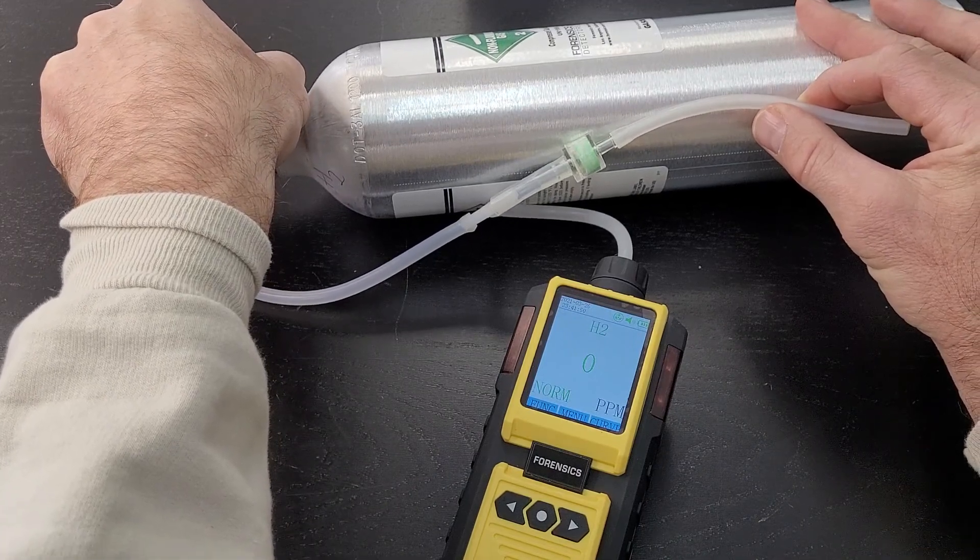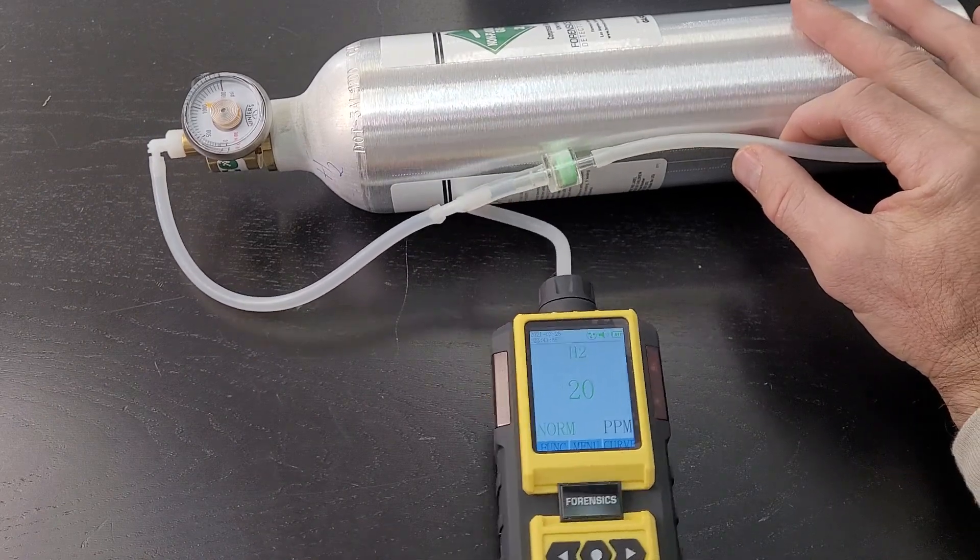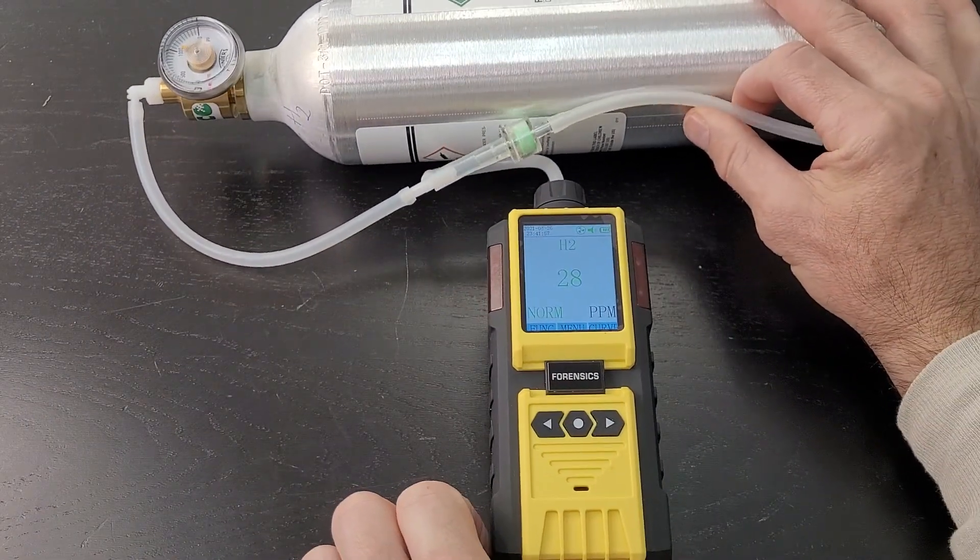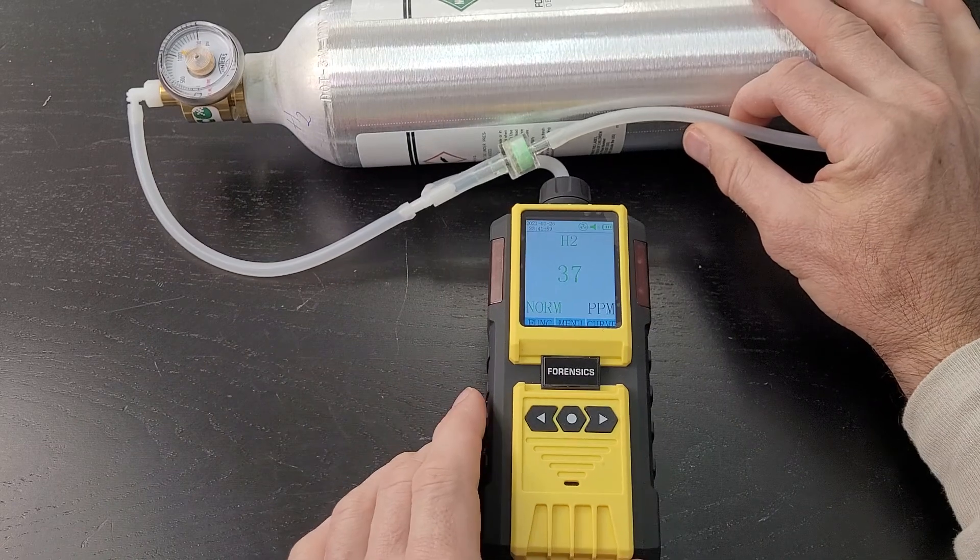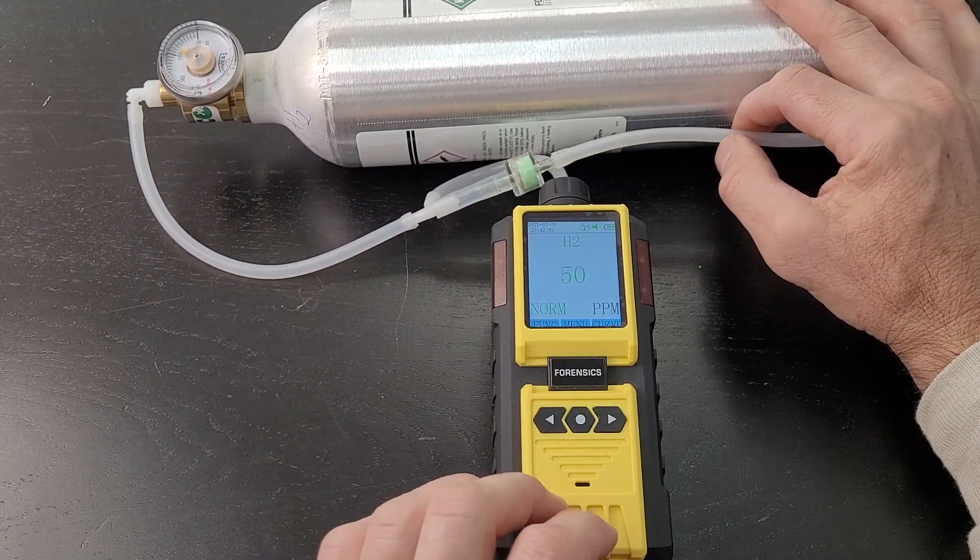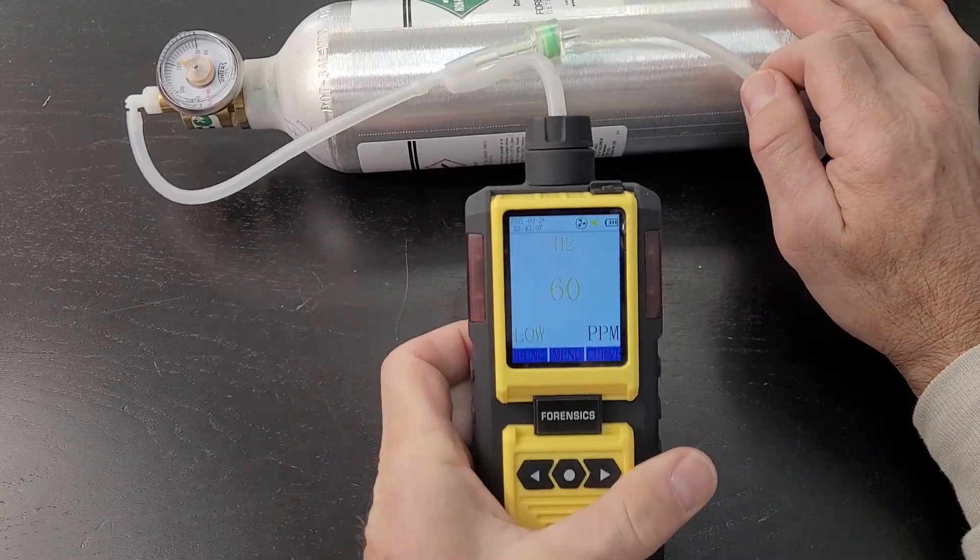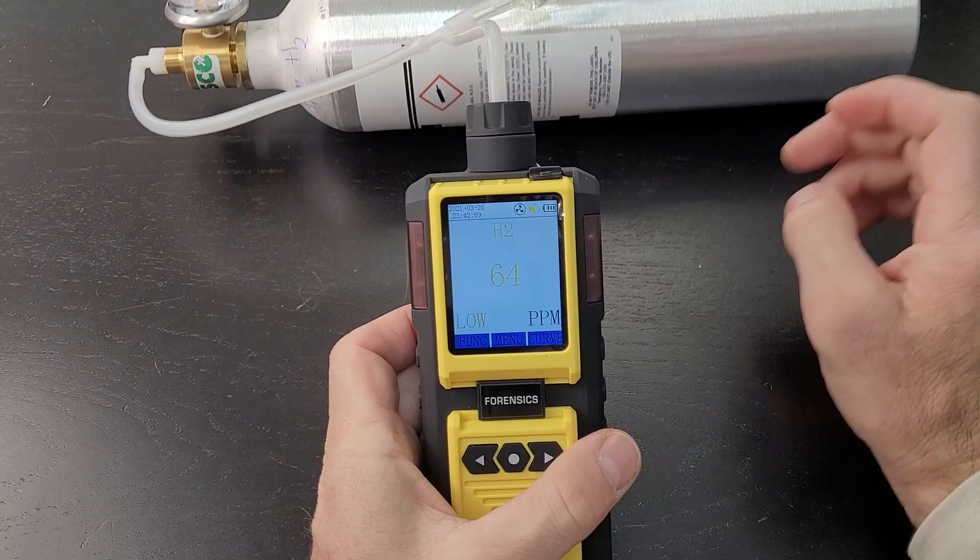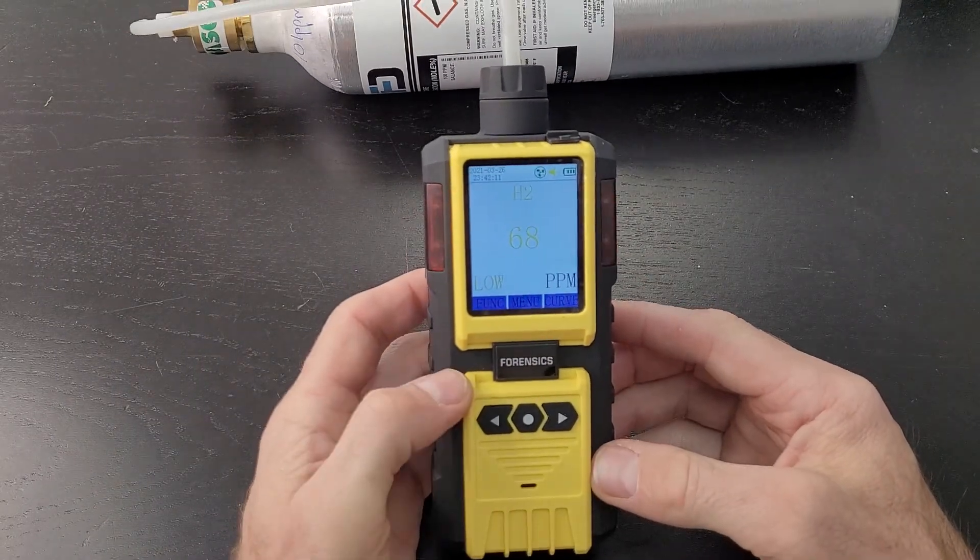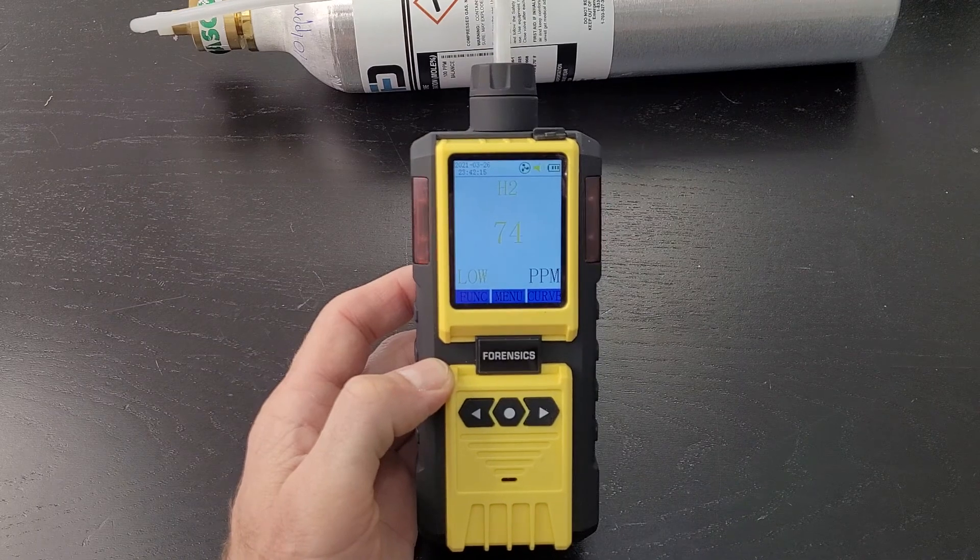We're going to expose it to 101 parts per million of hydrogen, and you're going to see the analyzer go up. Let's see, is it accurate? Is it exactly 101 parts per million? If it's not, we will be calibrating it. We've just exceeded the threshold of the first alarm. I recommend giving it about 60 seconds, so let's come back after a good 60 seconds.